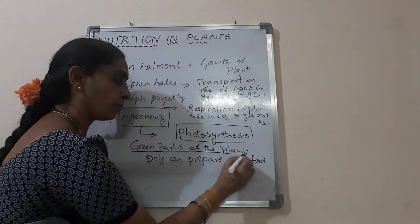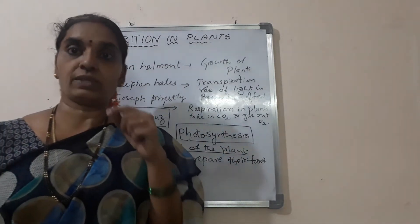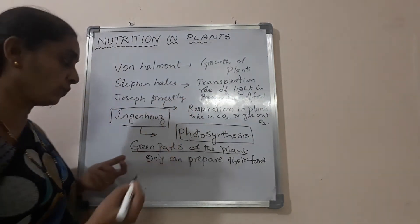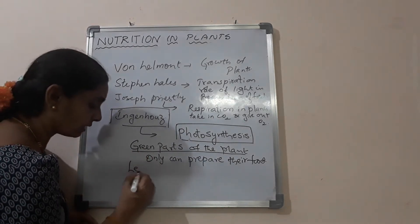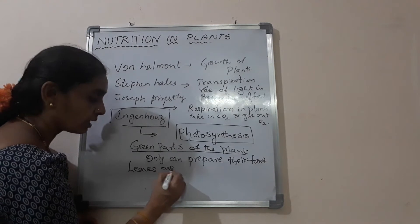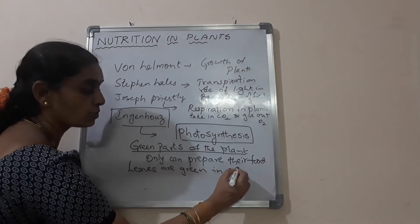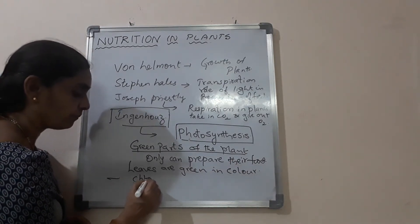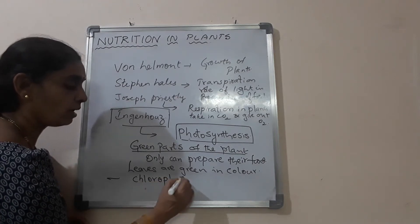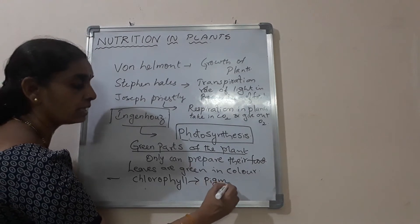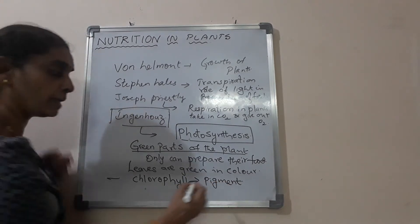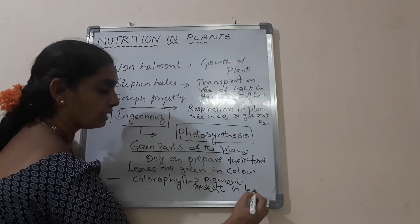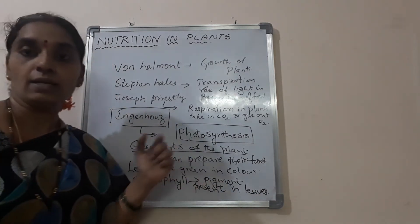What are the green parts of the plant? That means leaves and stem — the stem which is green in color. The leaves mainly contain stomata and chlorophyll. Leaves are green in color. Why? It is due to the presence of chlorophyll, which is a pigment — a coloring substance present in the leaves. Chlorophyll is the pigment present in leaves which gives green color to the leaves.